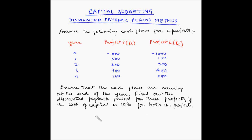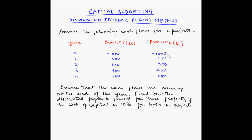Find the discounted payback period for these projects if the cost of capital is 10 percent for both projects — in other words, the time value of money is 10 percent. Here S stands for short and L stands for long. Project S is a short-term project which will give benefits in the short term, while Project L is a long-term project which will give benefits in the long term.